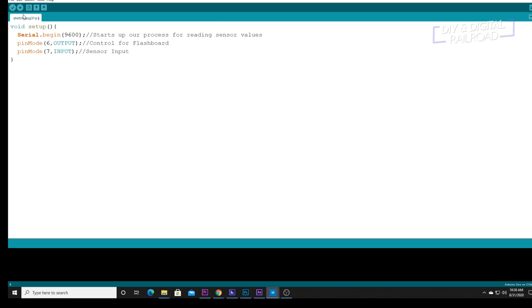So now we need to do void loop, parenthesis, bracket, curly bracket right there. We need to do int sensor equals digitalRead(7). And this sets up sensor as our value from the current sensor.